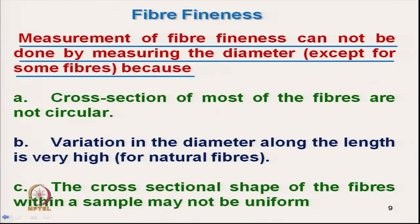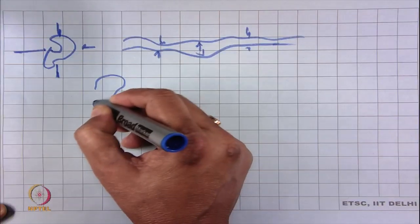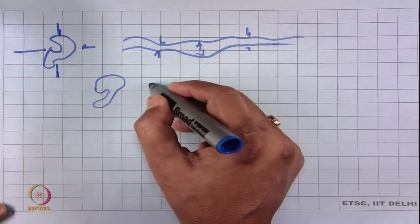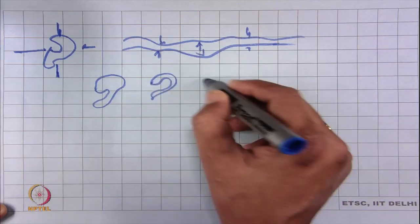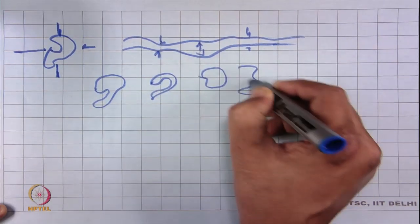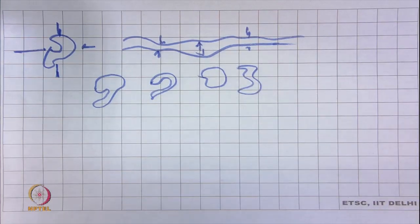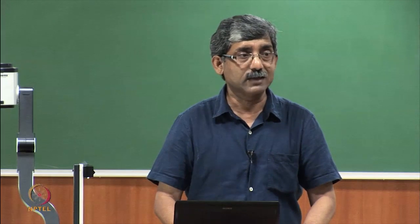A third problem is that the cross-sectional shape of fibres within a sample may not be uniform. For example, looking at a cotton fibre sample, fibres from the same lot have totally different cross-sectional shapes. Due to all these three problems — non-circular cross-sections, variation along length, and within-sample variation — we normally do not take fibre diameter as a measure of fineness.